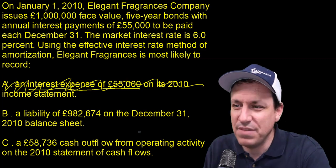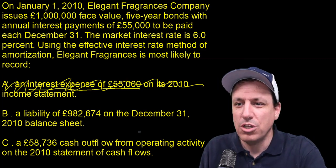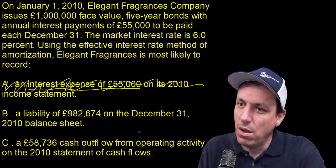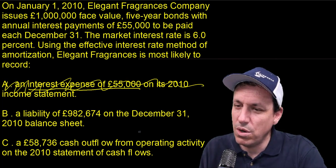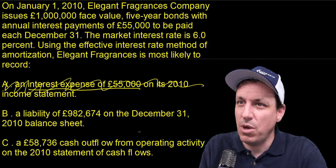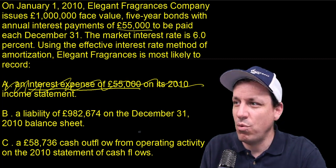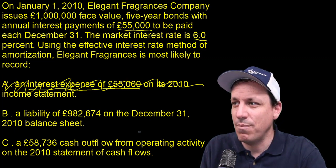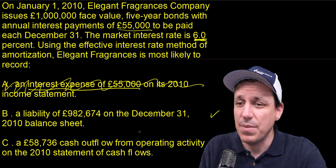Now, option B: a liability of $982,674 on the December 31st, 2010 balance sheet. The bond makes annual interest payments of $55,000, so the implicit rate is 5.5%, while the market rate is 6%. This means the bond is issued at a discount, so a carrying value below $1 million like $982,674 could be the right answer.